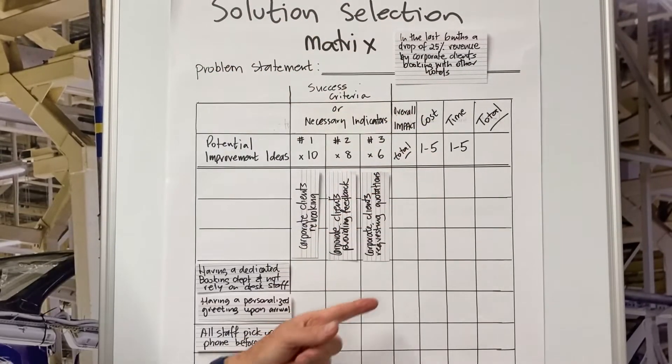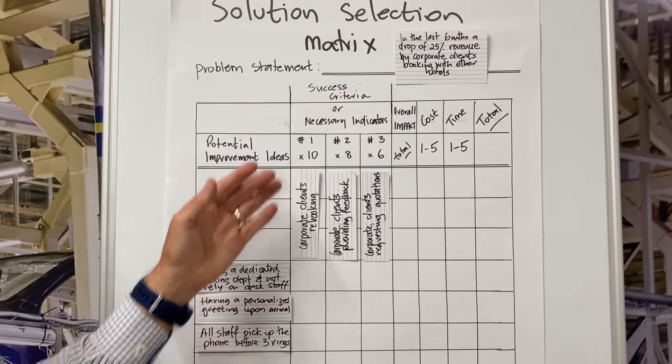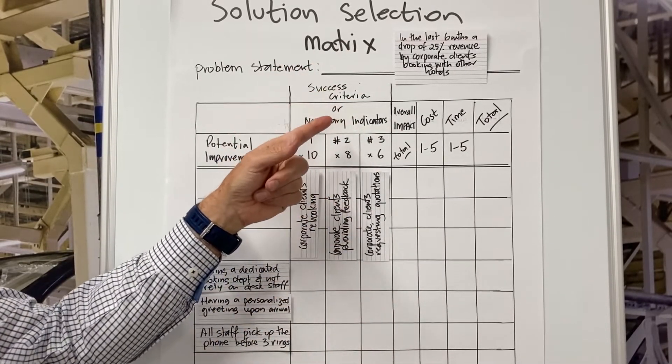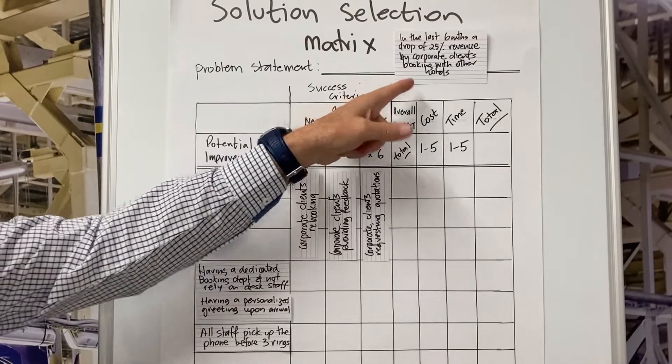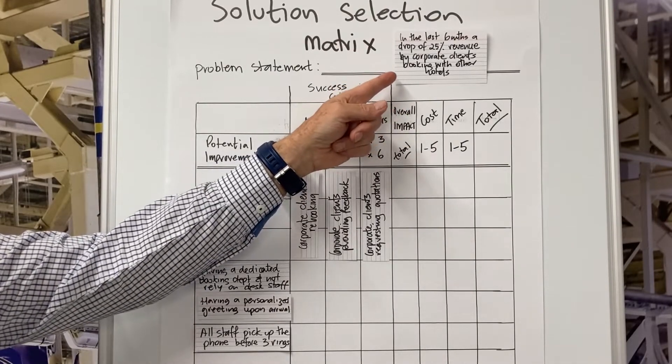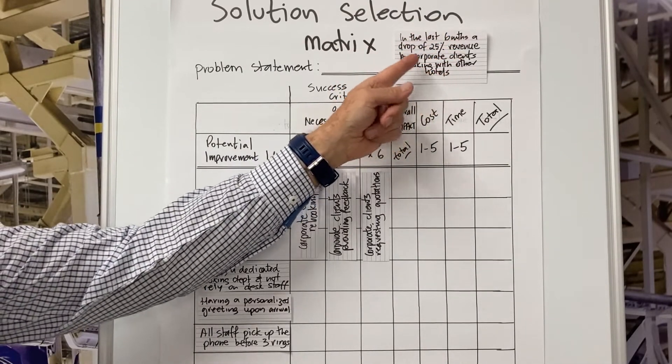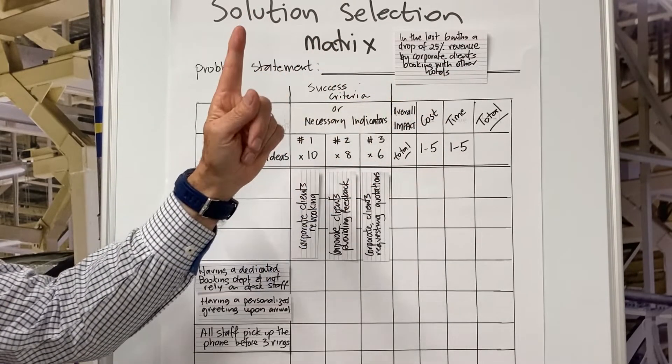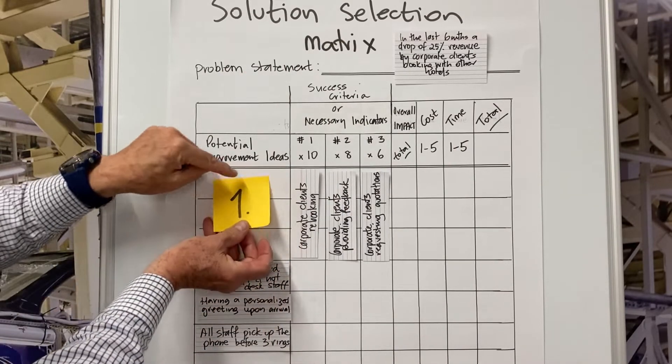To help demonstrate the solution selection matrix using a standard format, I've come up with a demonstration example. In this example, I've posted the problem statement. In the last six months, a drop of 25% revenue by corporate clients booking with other hotels.